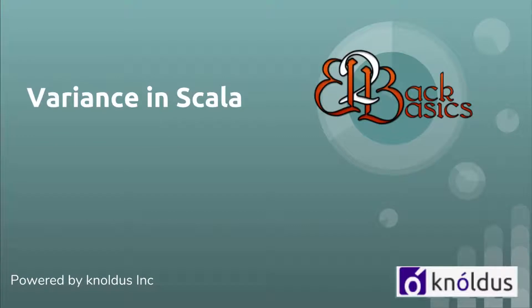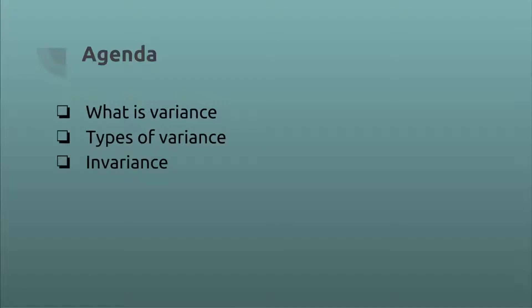In this lesson, we will talk about Variance in Scala. Our agenda will be: what is Variance, what are the different types of Variance, and then we will see what Invariance is. Invariance is one of the types of Variance, and in this presentation we will be talking mainly about Invariance. In future lessons we will see the other types of Variance, i.e. Covariance and Contravariance.